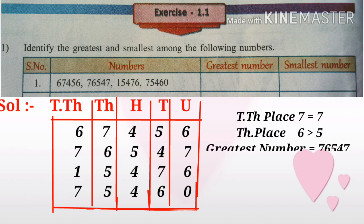Compare the thousands place: 5 and 6 — 6 is greater than 5. So the greatest number is 76,654, which has 6 in the thousands place, making it seventy-six thousand six hundred fifty-four.